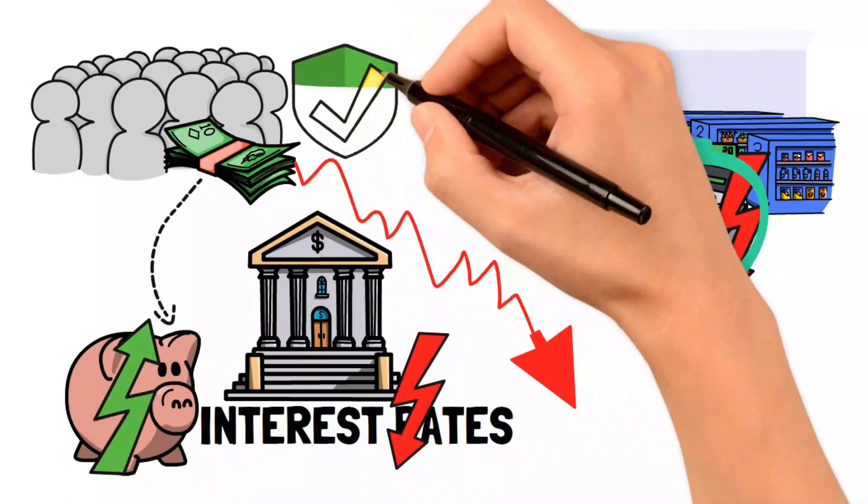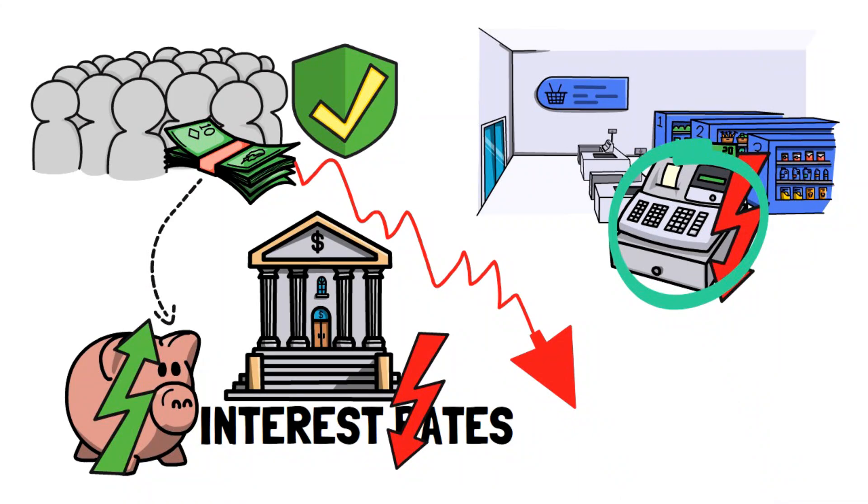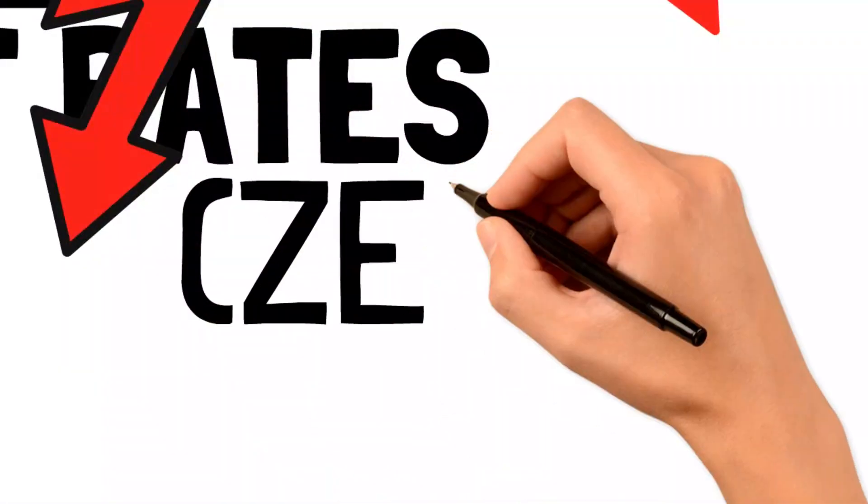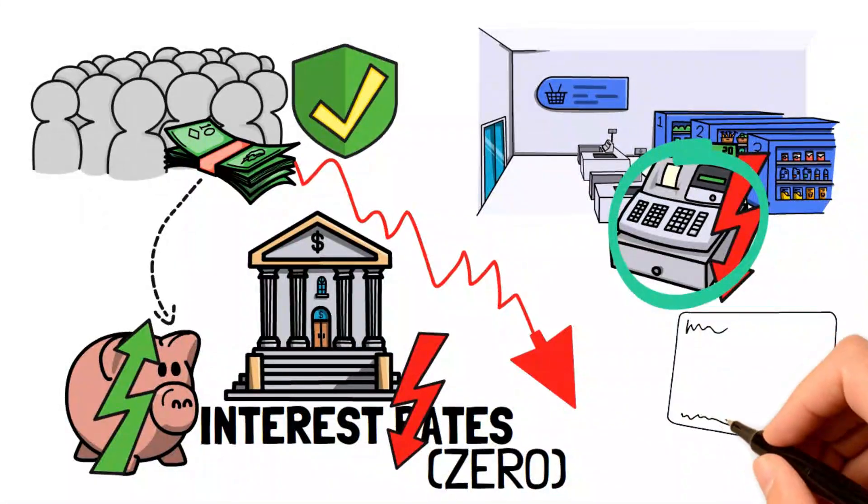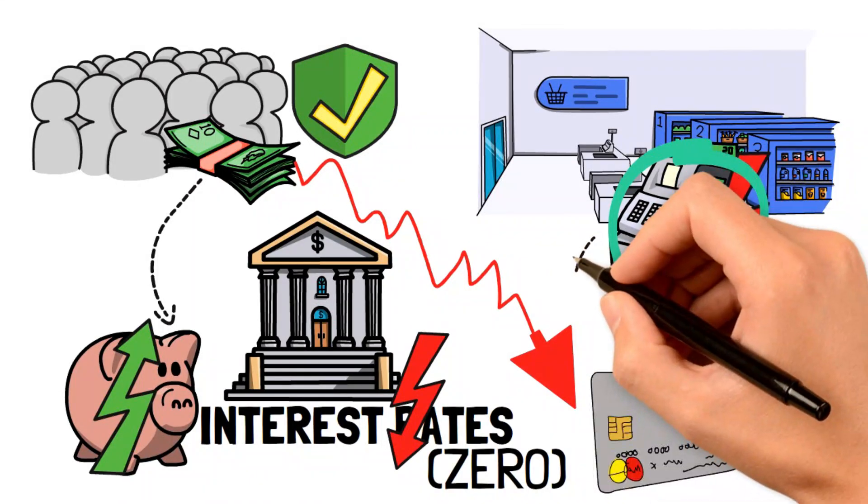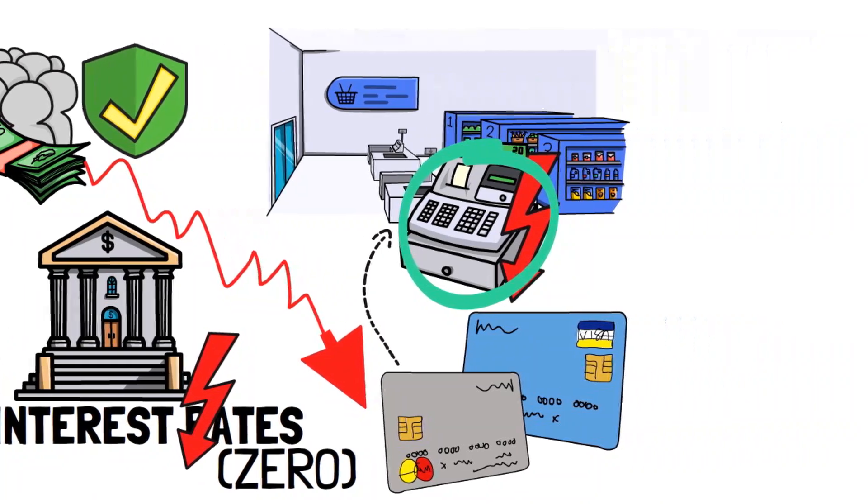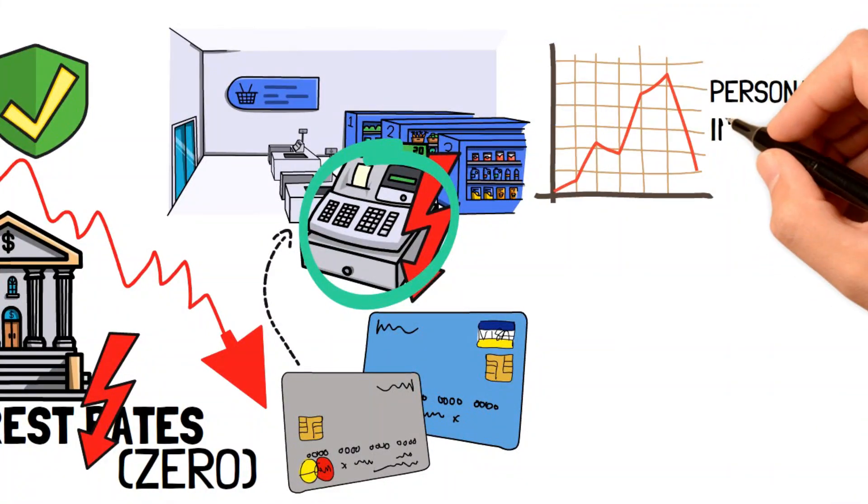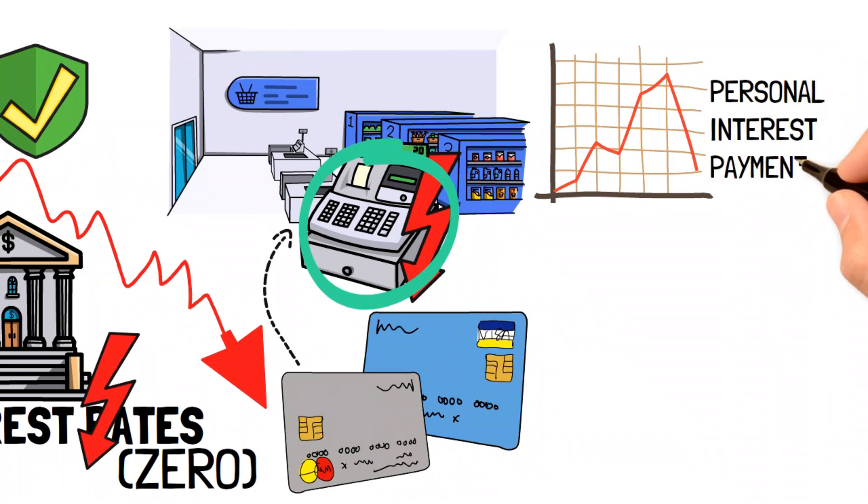Federal economists stress the current role of consistently low interest rates in safeguarding the financial stability of numerous Americans. As these rates approach zero, the cost of borrowing diminishes, making it easier to access credit and encourage loans. This phenomenon is mirrored in another illustrative chart showing a decline in personal interest payments.